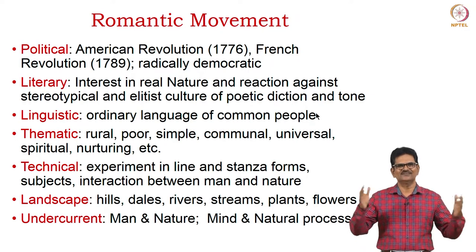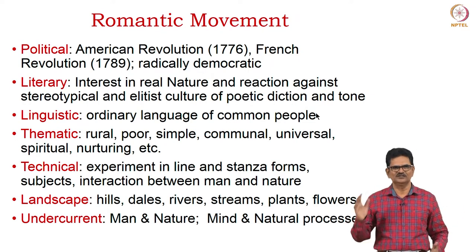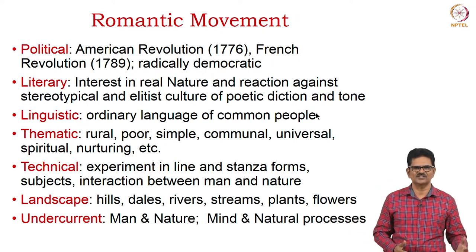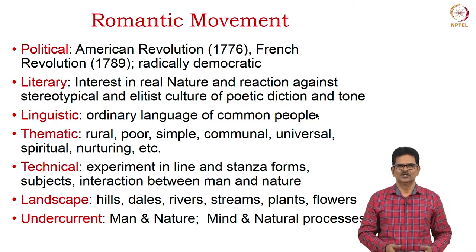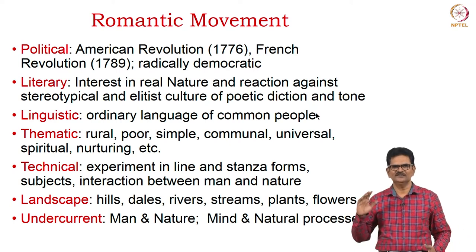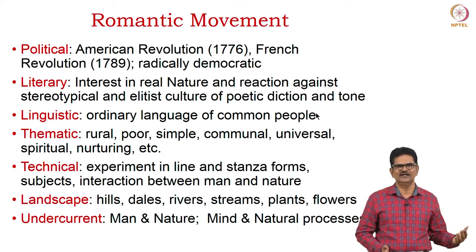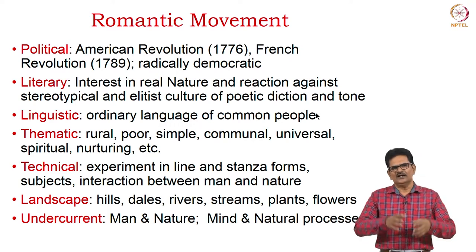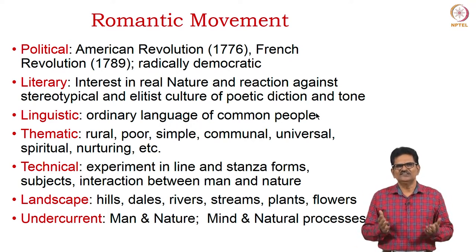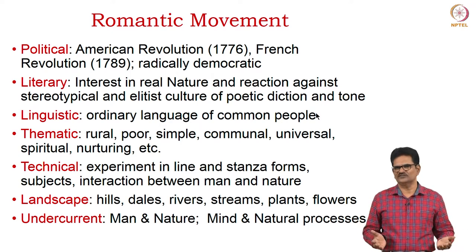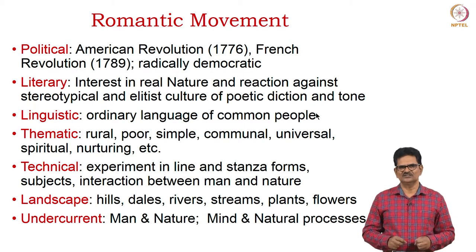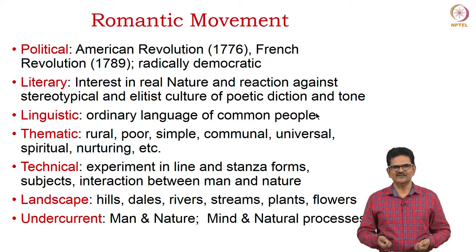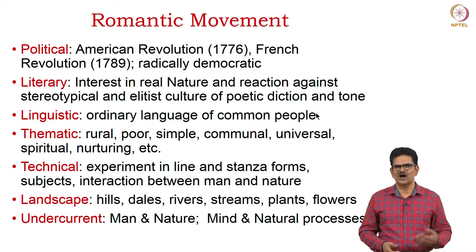The Romantic movement has several dimensions: political, literary, linguistic, thematic, technical, landscape, and one idea called undercurrent. Politically, the American Revolution in 1776 and the French Revolution in 1789 created a climate where there was a desire for a radically democratic society. In literature, poets took interest in nature and reacted against the stereotypical and elitist culture of poetic diction and tone of the previous era.